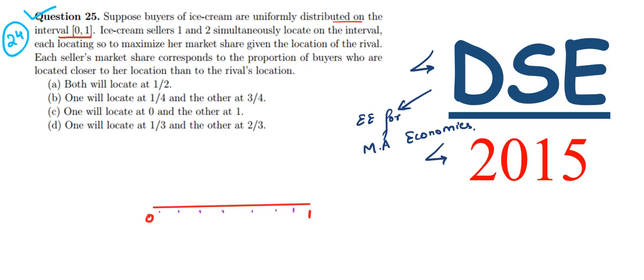Let this be our diagram corresponding to the question. Here we have ice cream sellers 1 and 2 simultaneously locating on the interval, each locating to maximize her market share given the location of the rival.